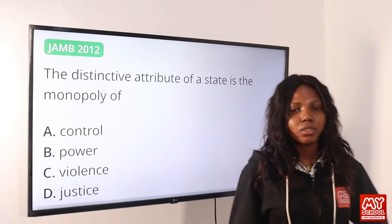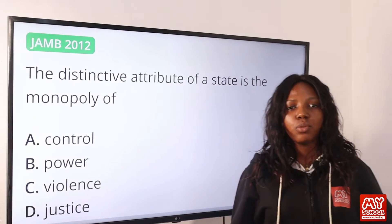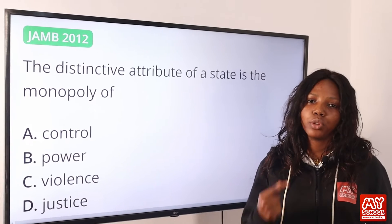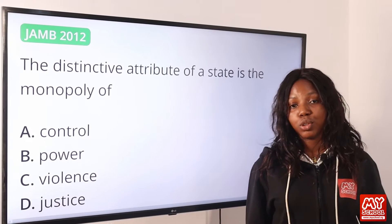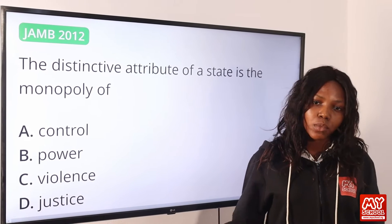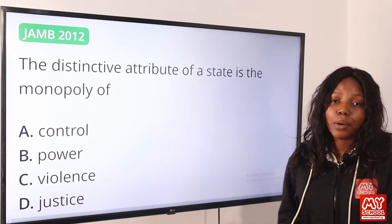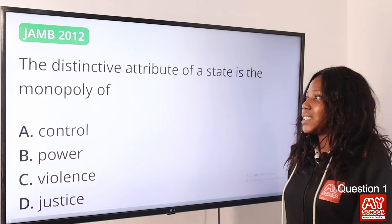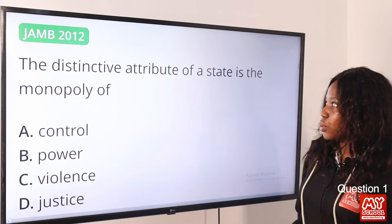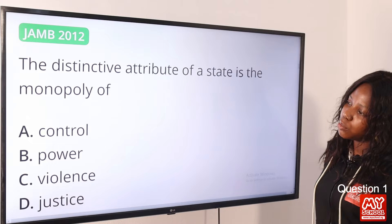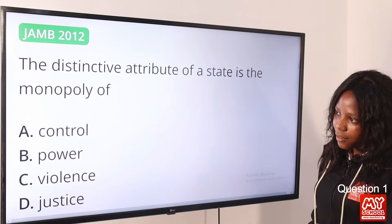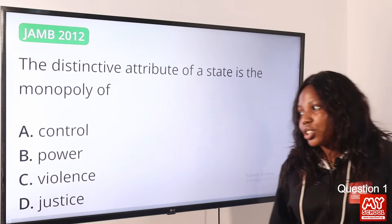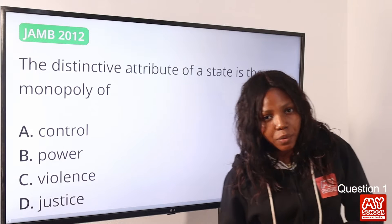Welcome back to my school channel. So right now we'll begin with question 1 and we'll be looking at questions 1 to 20. The distinctive attribute of a state is the monopoly of — the answer to this question is option B: power.